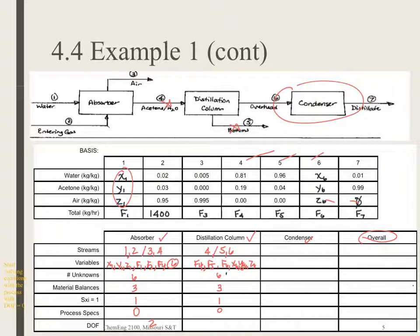The condenser. Stream six comes in. Stream seven comes out. So, my variables here are x6, y6, z6, f6, and f7. My number of unknowns, therefore, is five. I have three material balances. I have one sum of x. I have no process specs, so I have one degree of freedom. This one's closer, but it's not quite there.